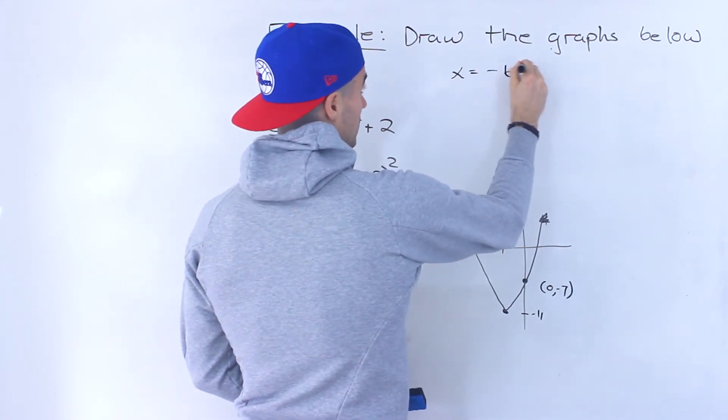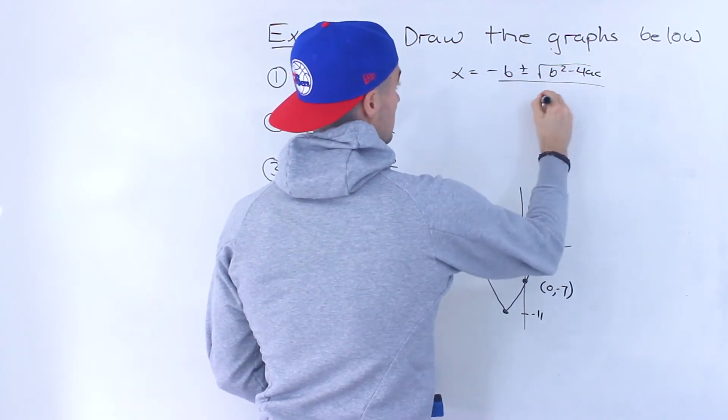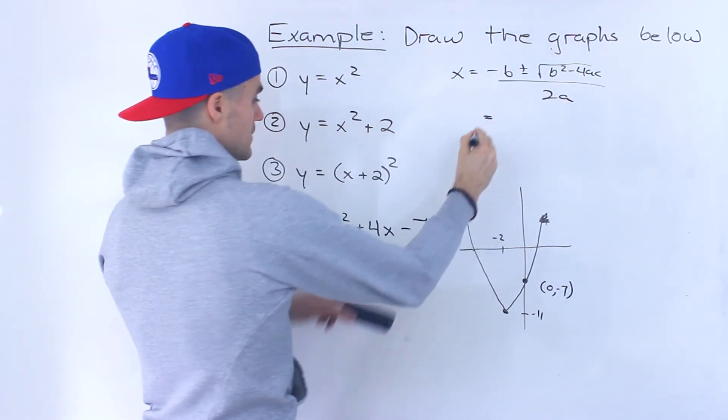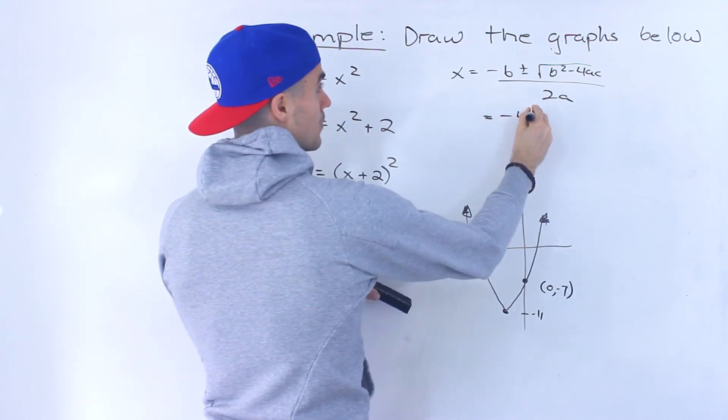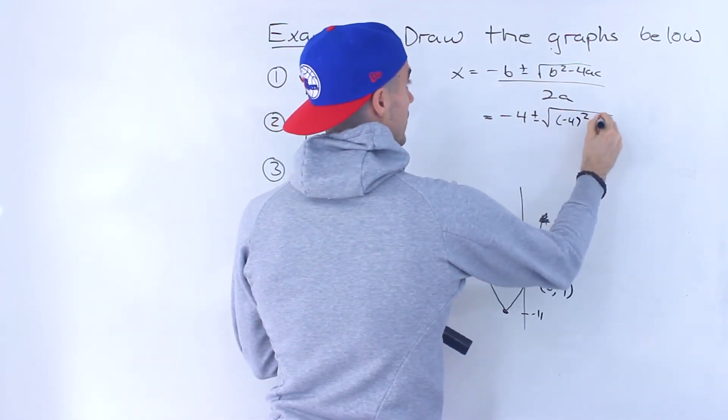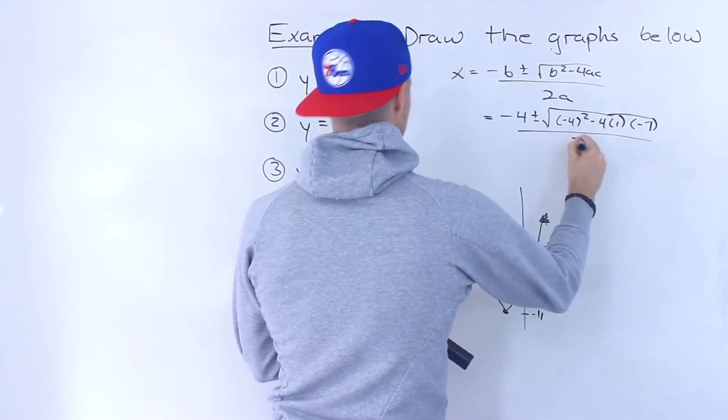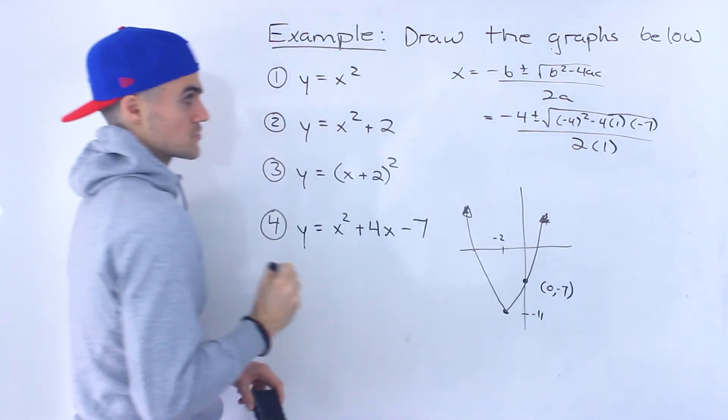What's the quadratic formula? Negative b plus or minus b squared minus 4ac all over 2a. So the b value is 4, so we'd have negative 4 plus or minus negative 4 squared minus 4 times 1 times negative 7, all over 2 times 1.